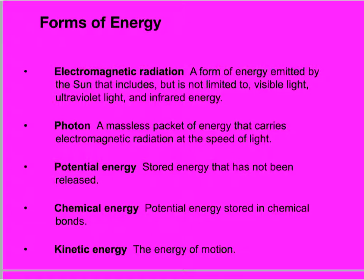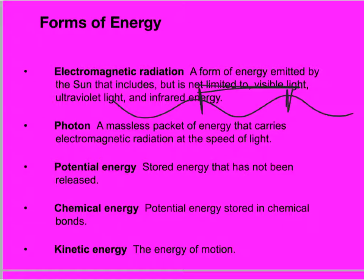The amount of energy contained in a photon depends on its wavelength — the distance between two peaks of the wave. Photons with long wavelengths, such as radio waves, have very low energy, while those with short wavelengths, like x-rays, have high energy. Photons of different wavelengths are used for many different purposes: high-energy, short-wavelength x-rays are used in medical diagnosis, while long-wavelength infrared waves can be used to identify water leaks or heat loss in buildings.